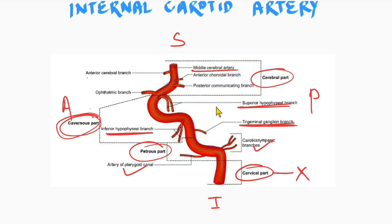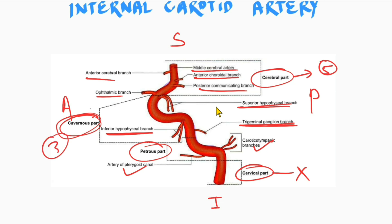In the cerebral part there is the middle cerebral artery, anterior cerebral artery, anterior choroidal branch, posterior communicating branch, and ophthalmic branch — five branches in the cerebral part. The cavernous part has three branches, the petrous part has two branches, and the cervical part has no branch.